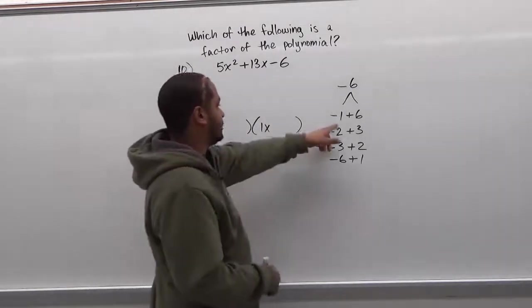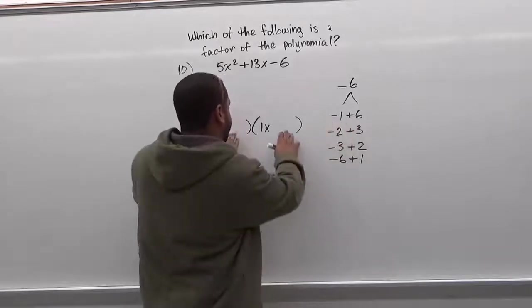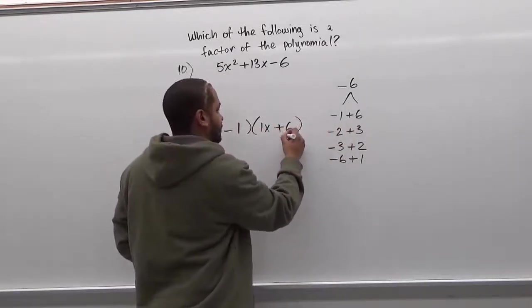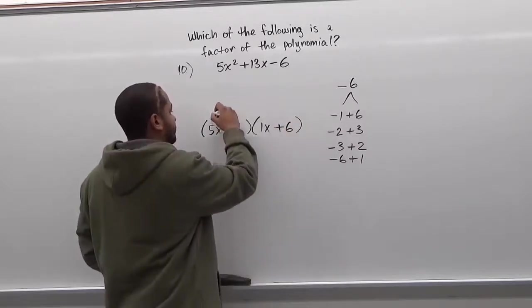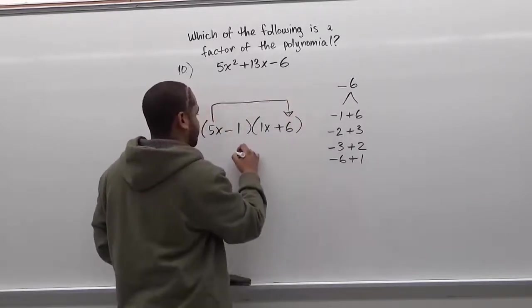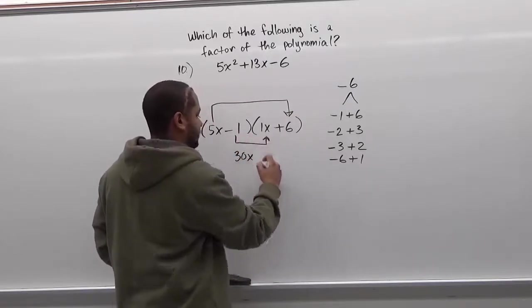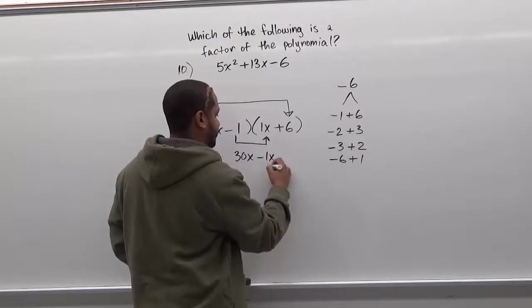To do that we're going to multiply by inserting these two factors into the parentheses set. So here we'll have negative 1 and here we'll have positive 6. We're going to take 5x times 6 which is 30x and we're going to take negative 1 times 1x which is negative 1x and add them up.